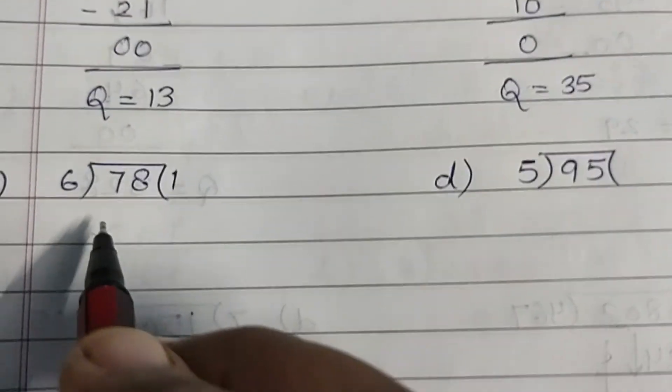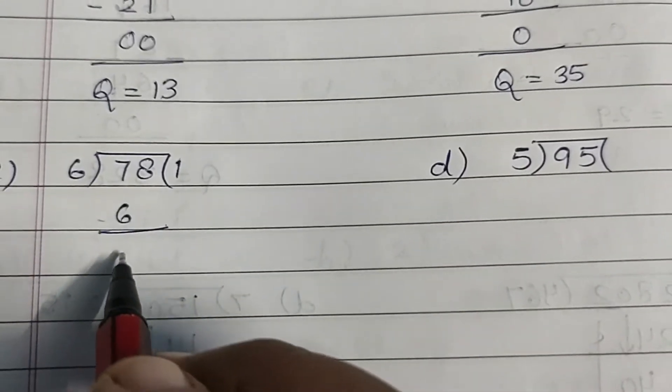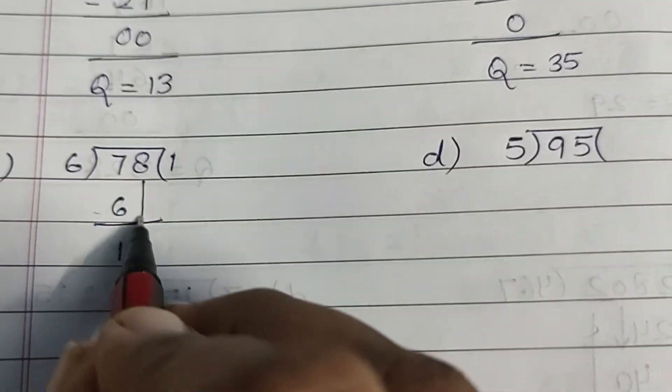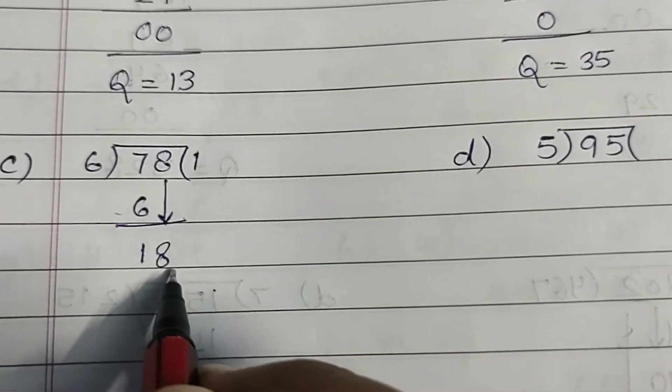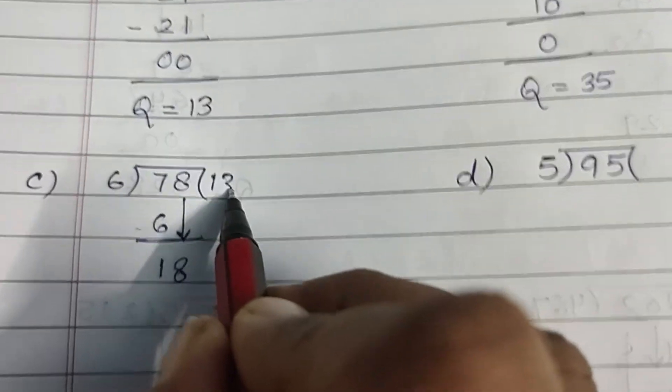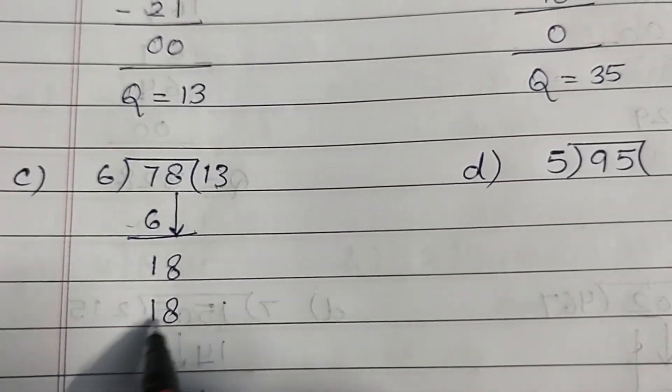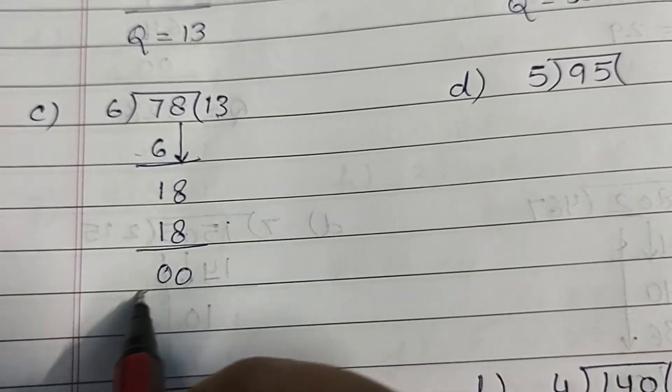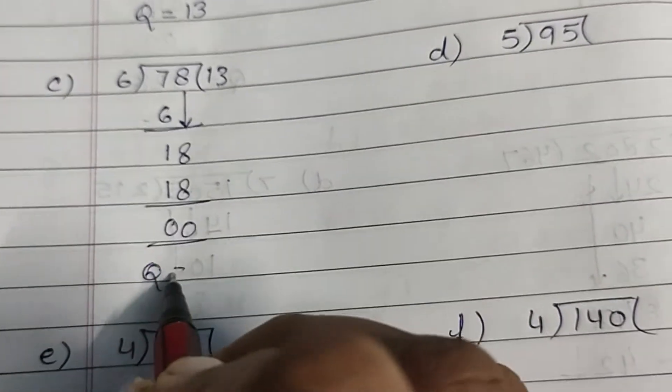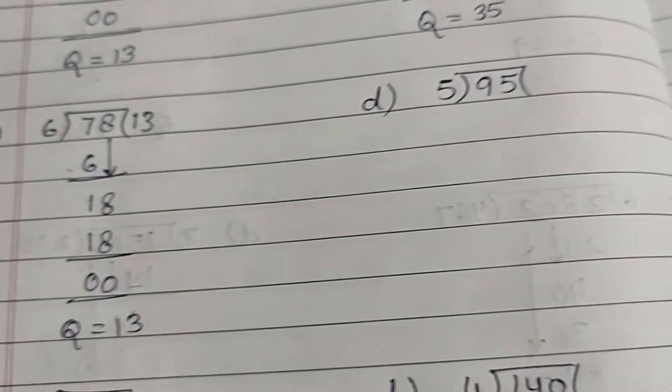6×1, 6. 7 minus 6, 1. Bring down 8, ho gaya 18. 6×3, 18. 18 minus 18, 0. Quotient is equal to 13.